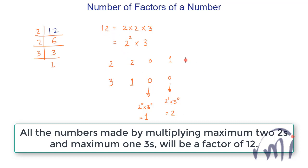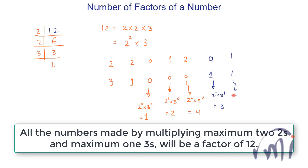Then you have a choice where you take two 2's and zero 3's: 2² × 3⁰ = 4. Again you can take zero 2's and one 3: 2⁰ × 3¹ = 3. Then you can take one 2 and one 3: 2¹ × 3¹ = 6. And then you can take two 2's and one 3: 2² × 3¹ = 4 × 3 = 12.